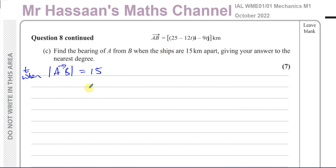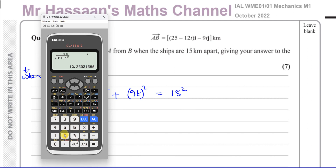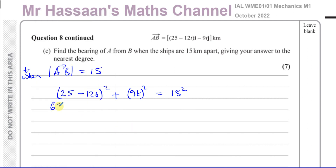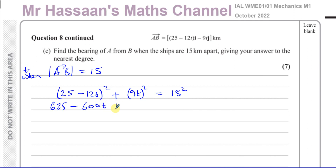The magnitude of A to B is given by the square root of the sum of the squares of the components, and that equals 15. I'll square both sides. The i component is (25 − 12t) and the j component is (−9t). Squaring the i component: 25 squared is 625, minus 2 × 25 × 12t = 600t, plus 144t². Squaring the j component gives 81t². So the equation is 625 − 600t + 144t² + 81t² = 225.